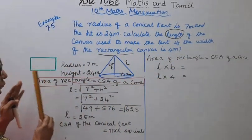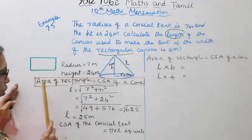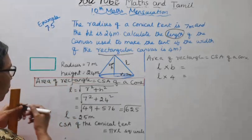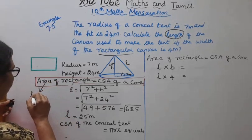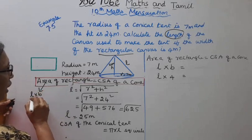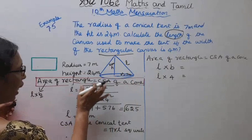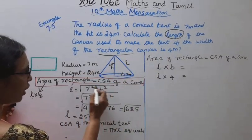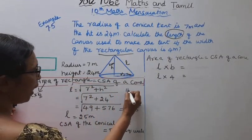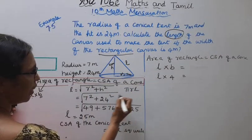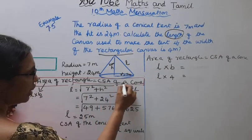The length of the canvas. The CSA of the cone equals the area of the rectangle (L × B).